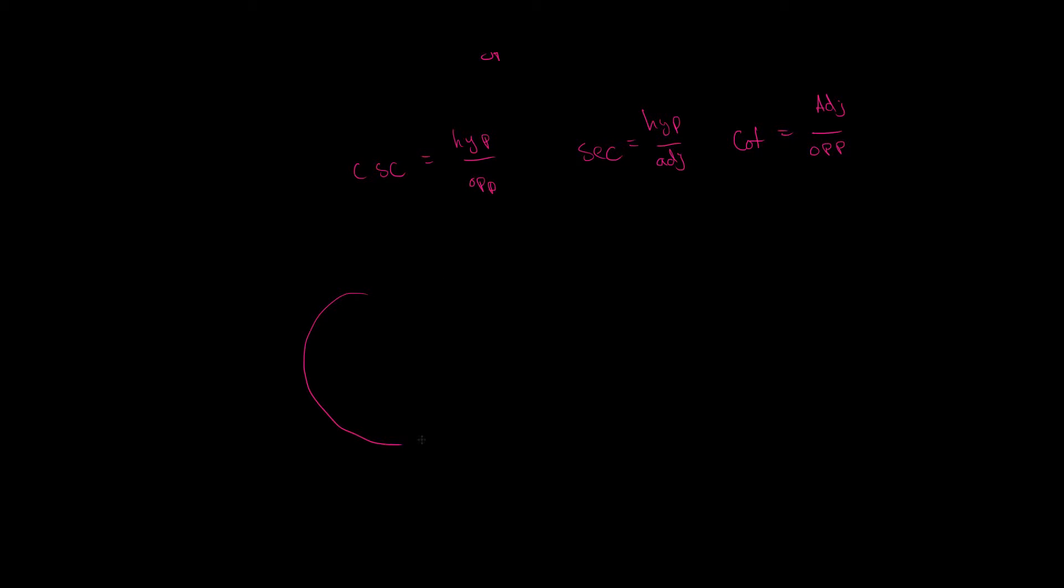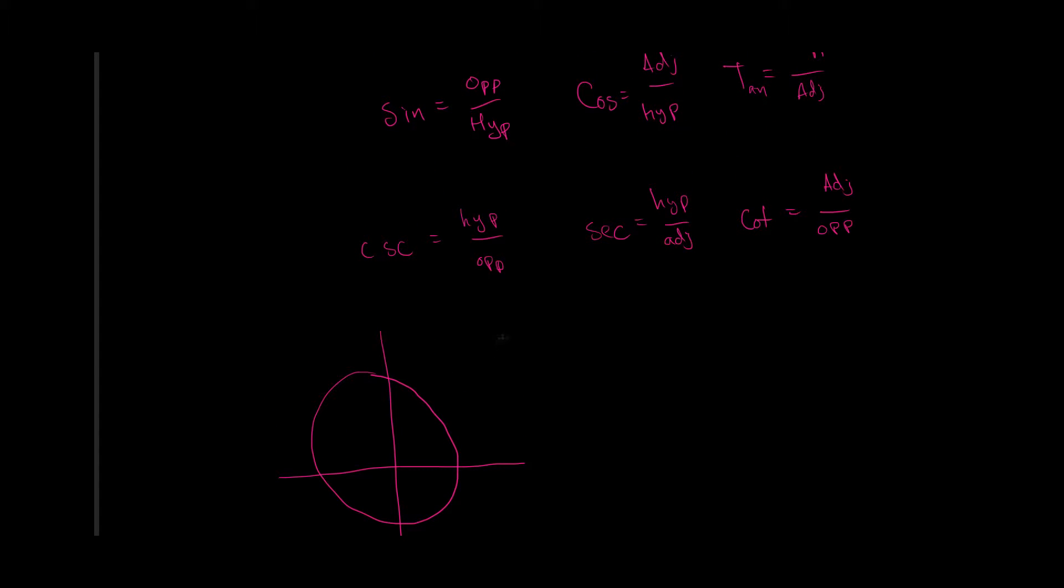I'm going to draw a unit circle here. Well, it's not going to be so much a unit circle. It's just going to be a circle, and here is my axis. Let's pretend that goes through the center. And where are our quadrants? Here is quadrant 1, quadrant 2, quadrant 3, and quadrant 4.